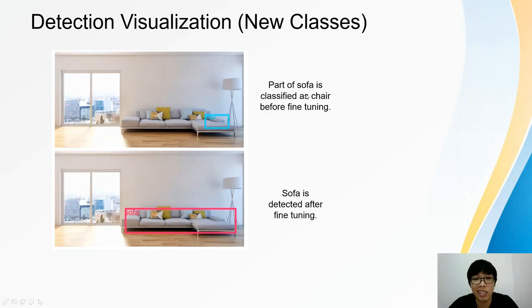Before fine-tuning, part of the sofa is classified as a chair, because chair and sofa share the highest similarity among the base classes. After fine-tuning, the sofa is correctly detected.